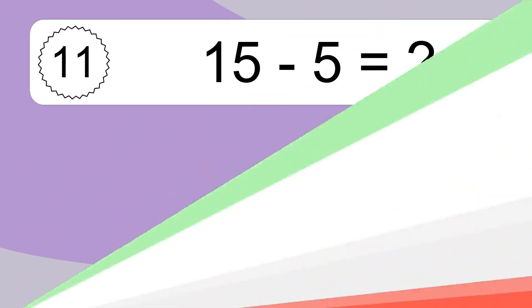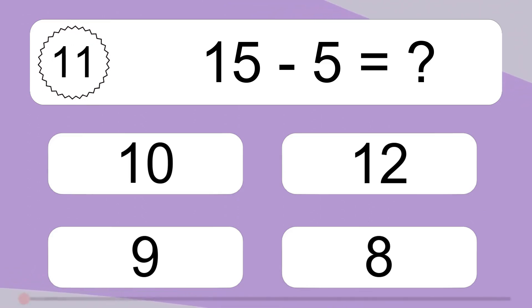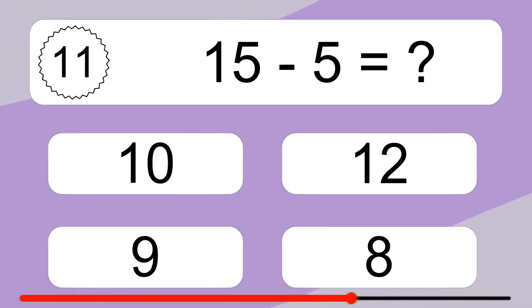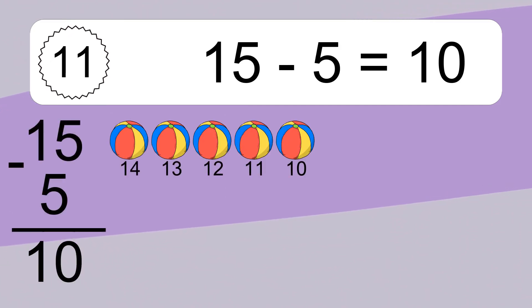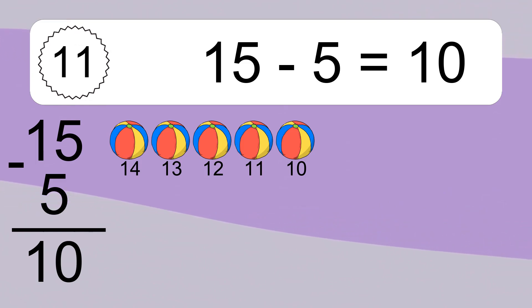15 minus 5 equals what? 15 minus 5 equals 10. Let's count it: 14, 13, 12, 11, 10.